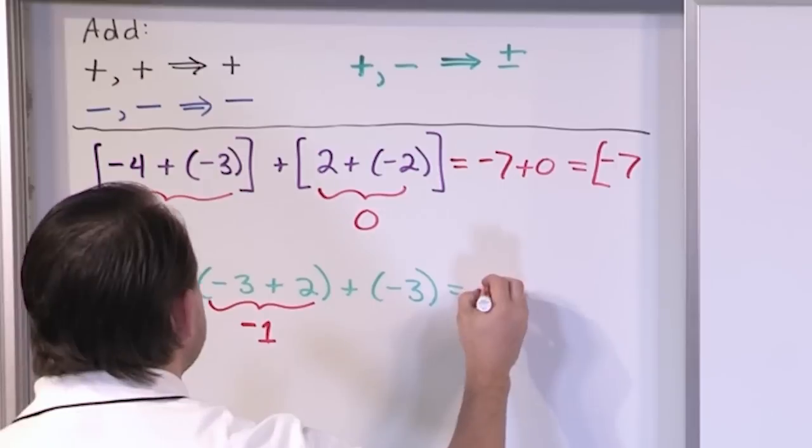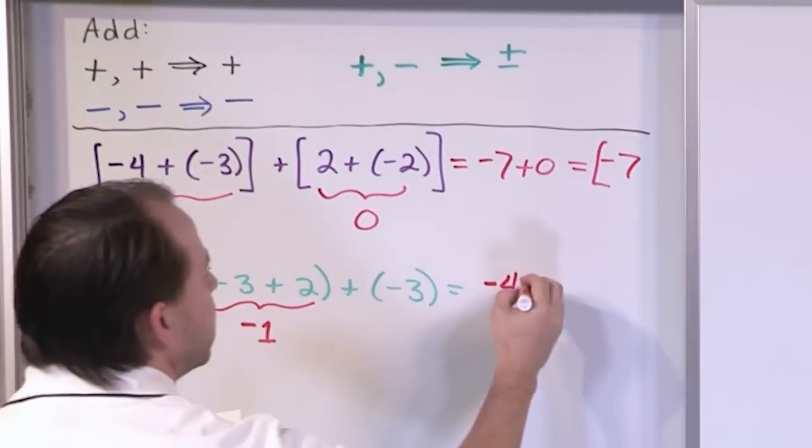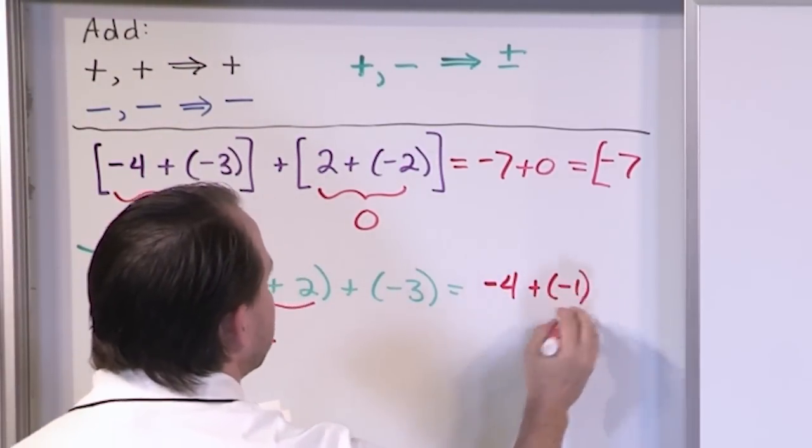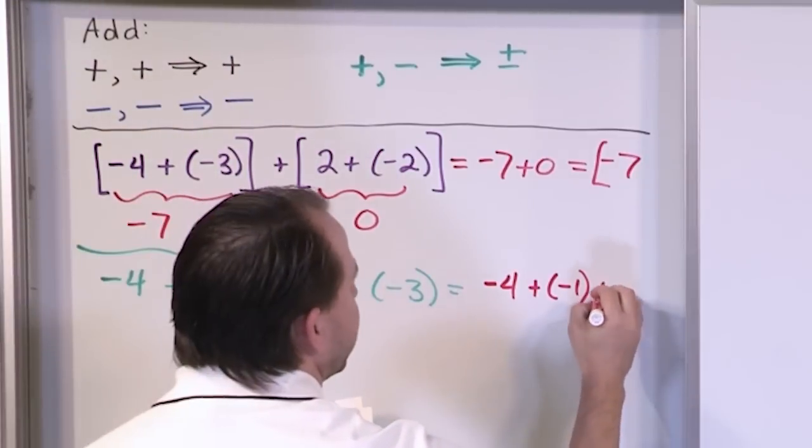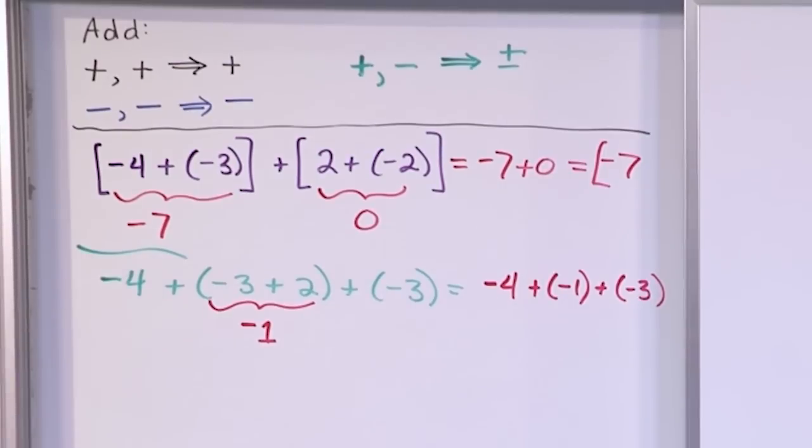So really what we have is negative 4 from here plus a negative 1. And over here we have plus a negative 3. And so, let me go and continue on over here.